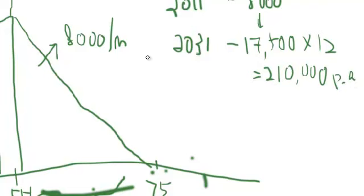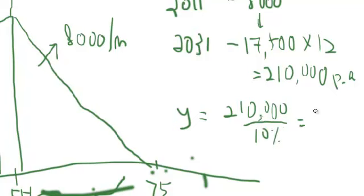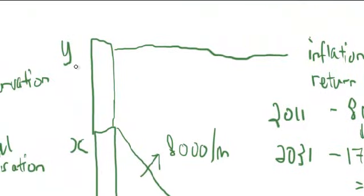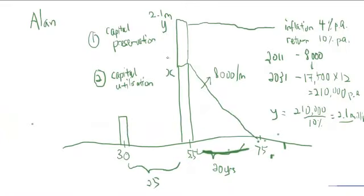The Y amount is 210,000 divided by 10%, so you get 2.1 million. Y amount is 2.1 million.